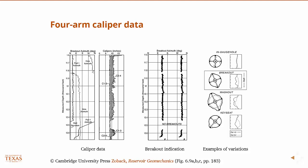And you can also have what they call key seat, and this is typically associated with deviated wells or horizontal drilling, and the fact that the drill string is resting on one side of the wellbore and sort of wearing an elongation out in the side of the wellbore. So we don't want to misinterpret one of these two things as an actual breakout. So we have to use very careful interpretation.